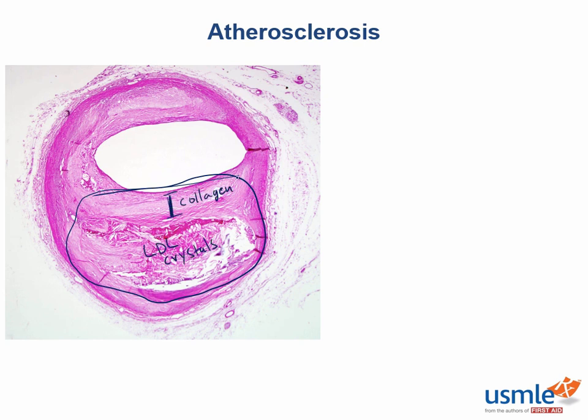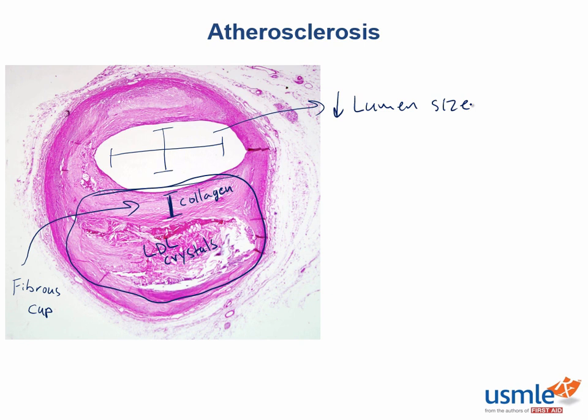The complications here are related to the decreased luminal diameter as well as the thrombogenic contents under this thin fibrous cap. If this fibrous cap ruptures or the luminal diameter continues to decrease, this can lead to downstream ischemia and/or infarction. In addition to the stenosis of the lumen, the presence of this plaque can actually disrupt the diffusion of oxygen and nutrients into the intima and inner layers of the media. This can lead to intimal as well as medial atrophy and necrosis, which can further weaken the vessel wall, setting us up for aneurysms.